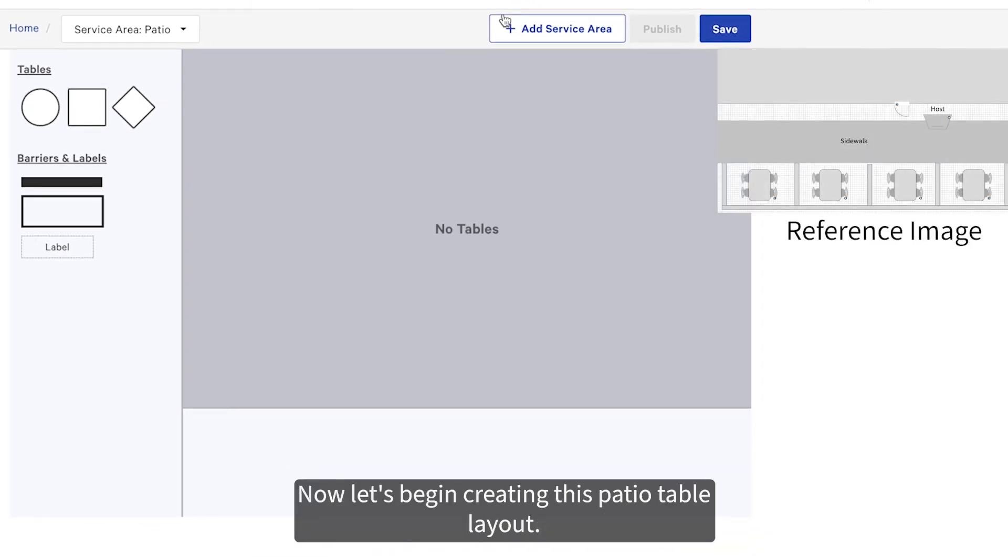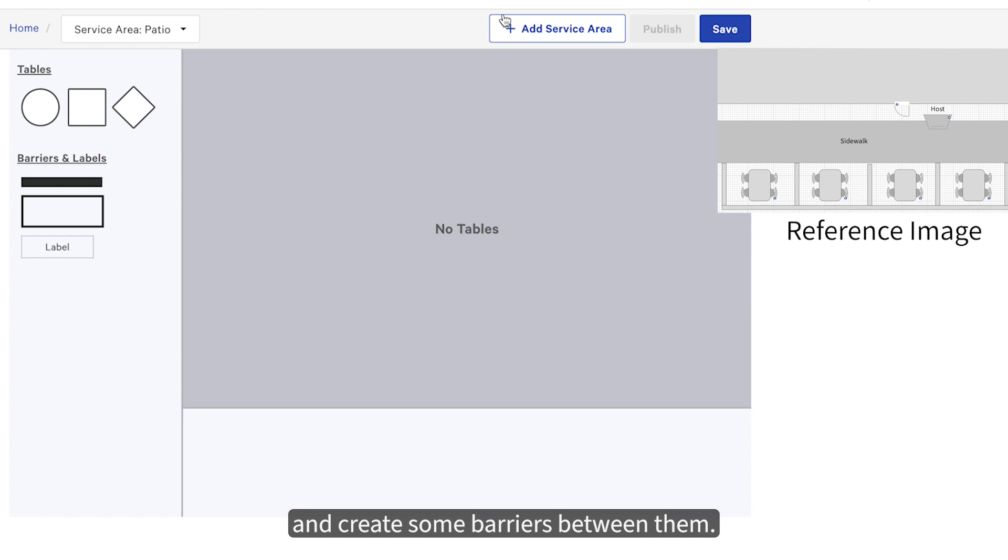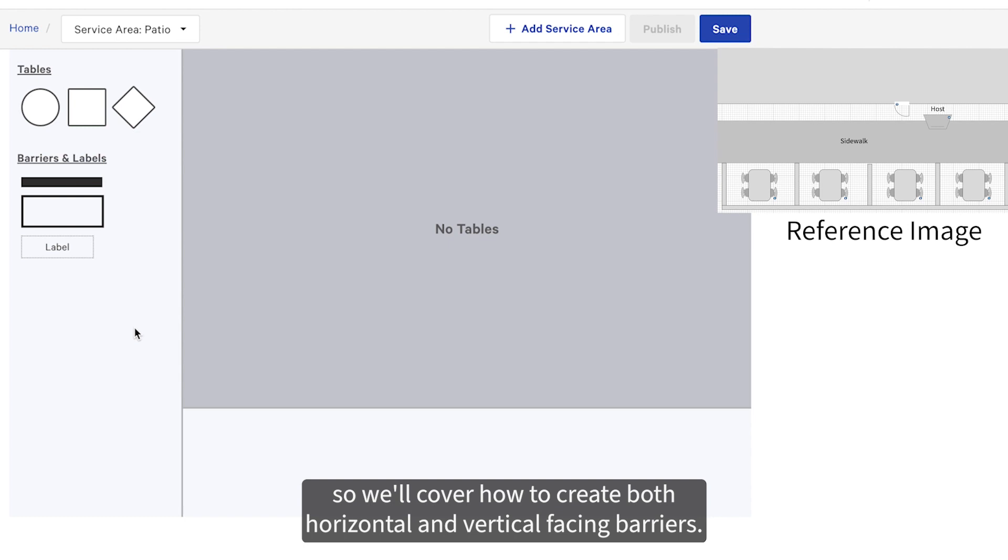Now let's begin creating this patio table layout. We'll need to create four tables along the sidewalk and create some barriers between them. Some of these barriers will be rotated, so we'll cover how to create both horizontal and vertical facing barriers.